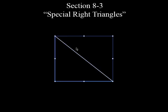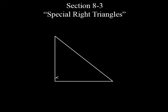Point three is called special right triangles. There are two types of special right triangles that we're going to talk about in this lesson. The first type is a right triangle, obviously, because it says special right triangles.